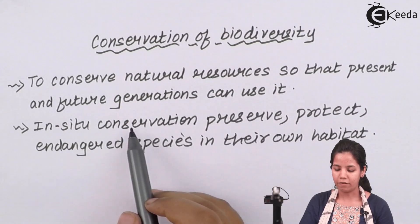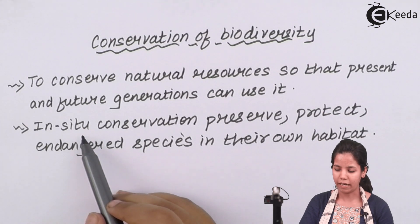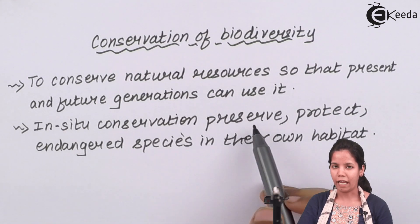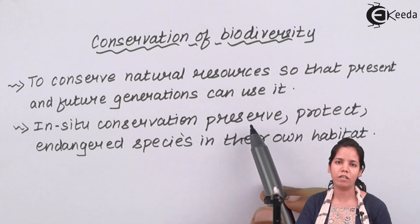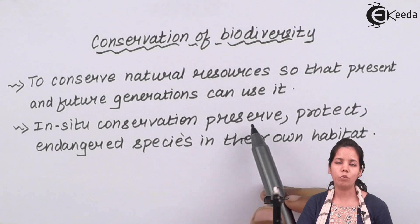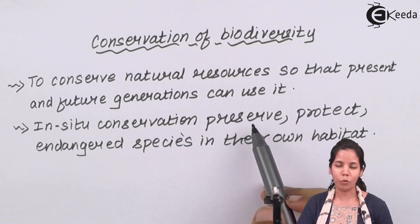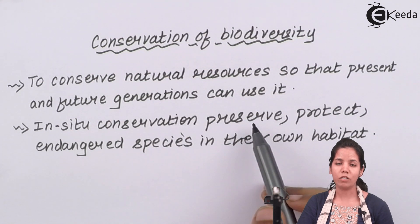To conserve biodiversity, in-situ conservation is widely used, in which an organism is preserved or protected when it is found to be endangered, in its own natural habitat. In-situ conservation is the best form of conservation since the organism or species won't feel homesick and it can sustain, grow, and feel protected among species which are its own or which are similar.